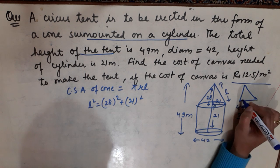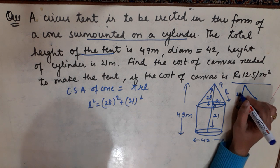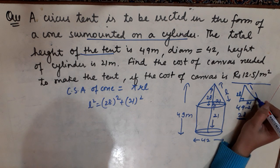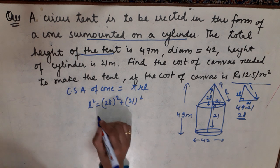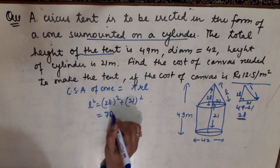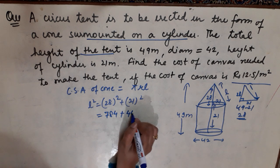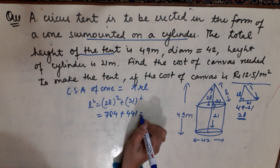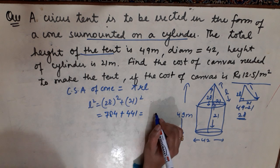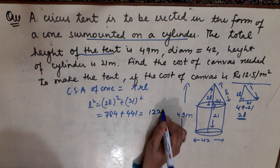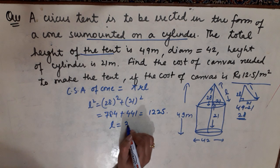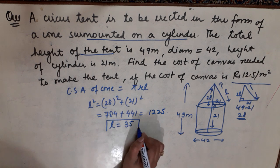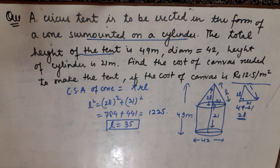We have a right-angle triangle where the base is 21 and the perpendicular height is 28, and we need to find the hypotenuse, which is the slant height L. So 28² is 784, plus 21² which is 441, giving 1225. Therefore L² = 1225, so L = 35.